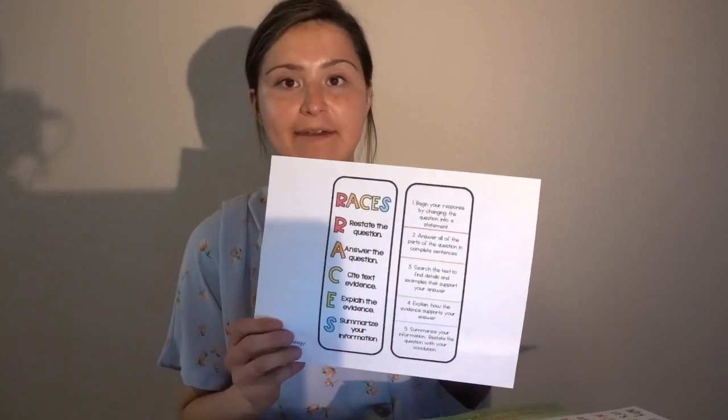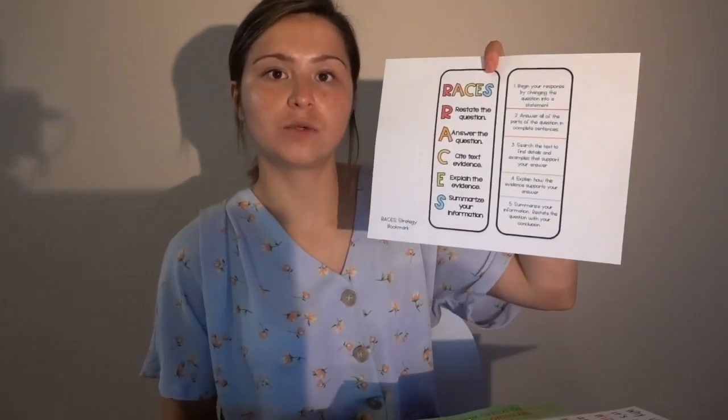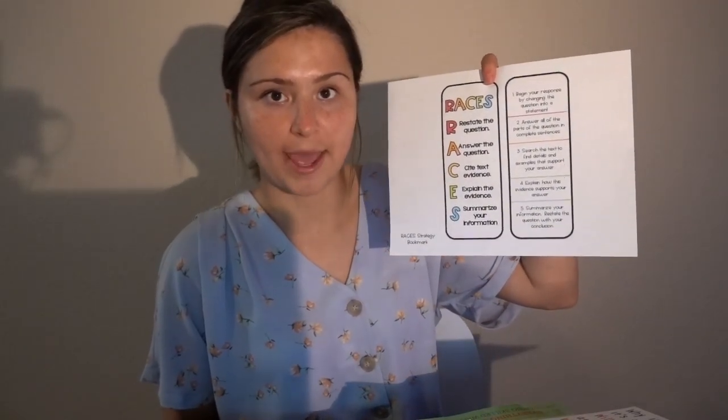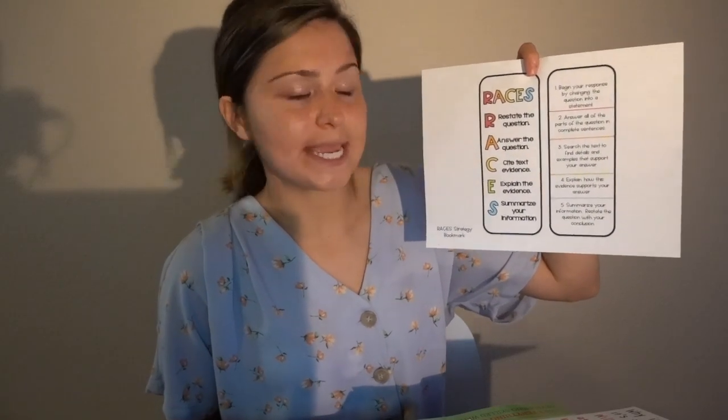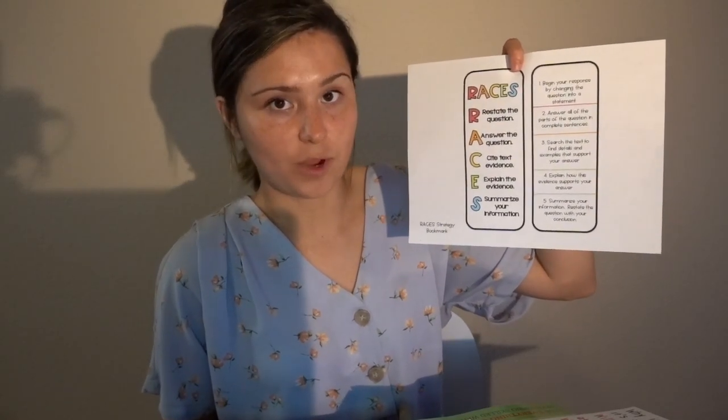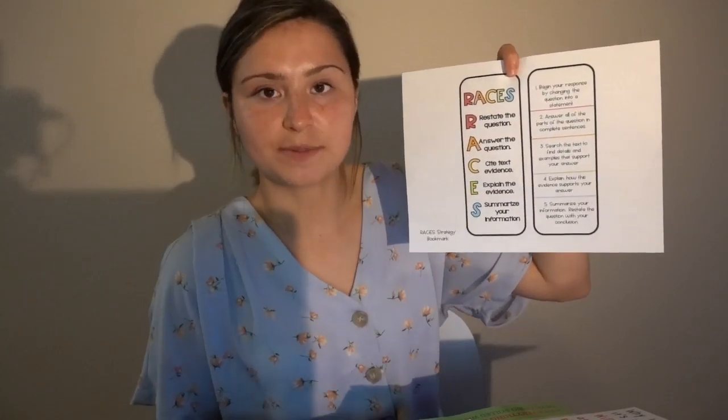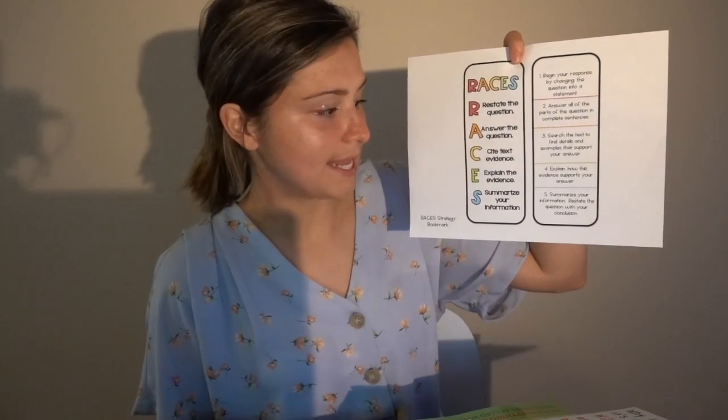Whenever we answer questions, we need to cite evidence from the text, so we use RACES to help us do that. R is to restate the question. A is to answer the question, and that means all parts. C is to cite the evidence. E is to explain the evidence. And S is to summarize your information at the end. S is a little bit like R, except in a different way.